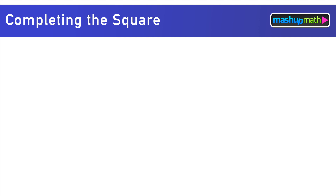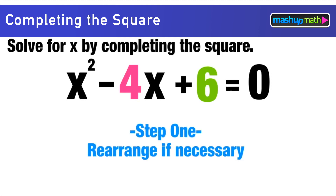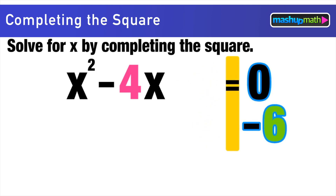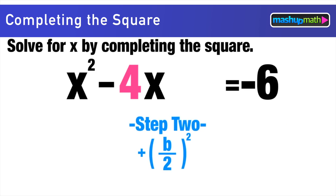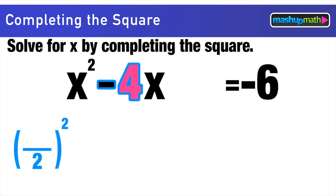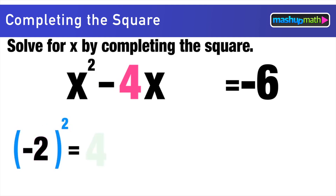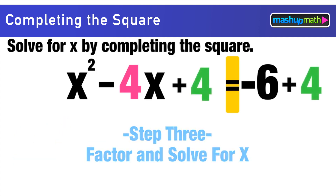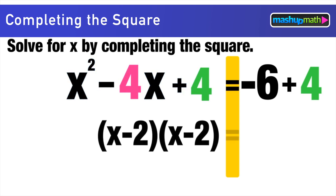For our next example, we solve x² - 4x + 6 = 0 by completing the square. Step one: subtract 6 from both sides so all constants are on the right, giving x² - 4x = -6. Step two: b = -4, so -4÷2 = -2, and (-2)² = 4. We add 4 to both sides. The trinomial x² - 4x + 4 factors to (x-2)(x-2).